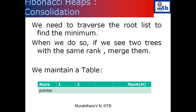This is done using a table - a simple array whose size is rank of h. We will show that the rank of h is going to be order of log n; in particular it is 2 times log n plus 1. So you take a table of size 2 times log n. Initially this keeps track of pointers to nodes by rank. If you come across a tree whose rank is i, then in rank[i] you store the pointer to that tree. Initially all these pointers will be null.